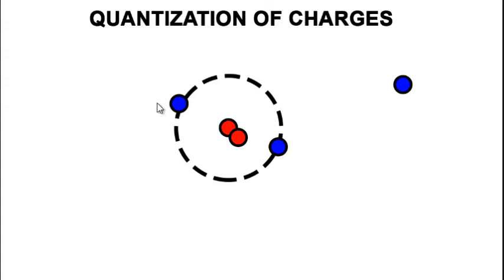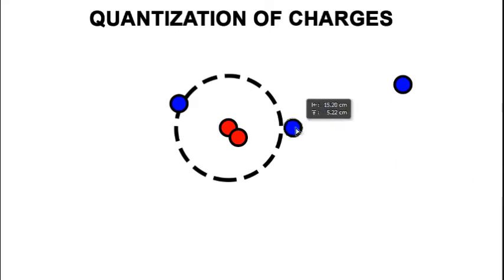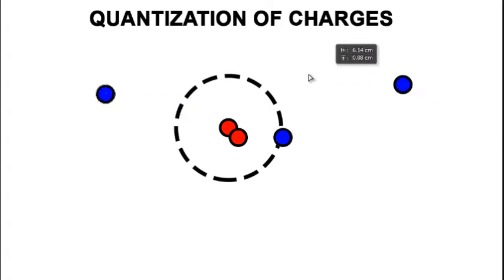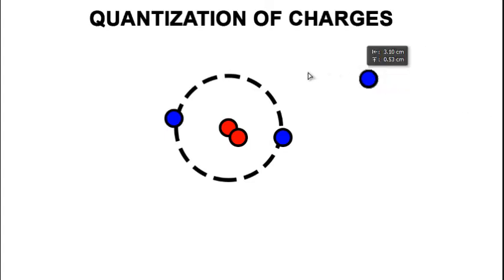Here we have an atom that contains two electrons and two protons at the middle. The electrons are negative and the protons are positively charged. If we remove one electron from this object, this object has more positive charges and less negative charges and it becomes positive. But if we now add electrons to the object, this atom has more electrons and less positive charges, so the total charge becomes negative.